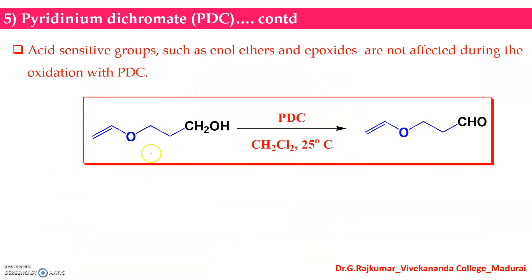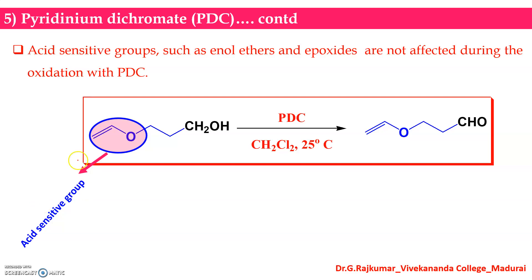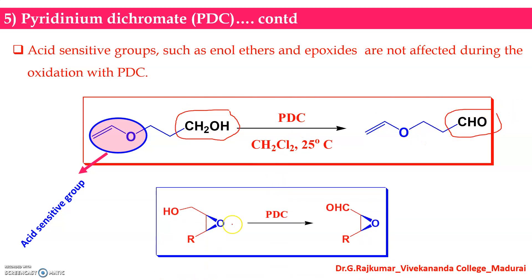Acid-sensitive substrates like enol ethers and epoxides are not affected during oxidation with PDC. The acid-sensitive group is not affected by PDC — only the CH2OH can be oxidized into CHO. Epoxide rings will also not be affected by PDC; you can convert CH2OH into CHO selectively.